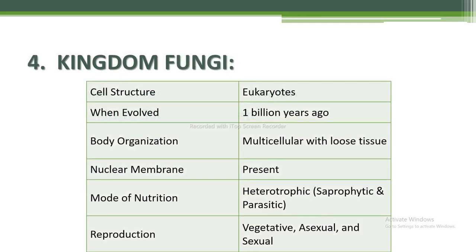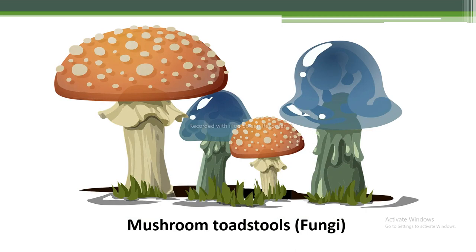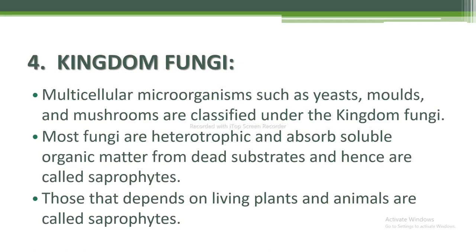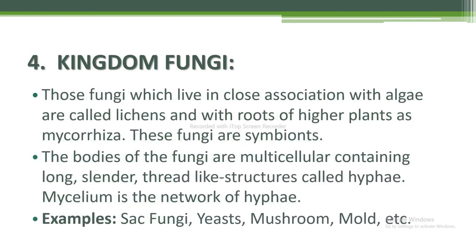Next is kingdom Fungi. Cell structure: eukaryote that evolved 1 billion years ago. Body organization: multicellular with loose tissue, nuclear membrane present. Mode of nutrition: heterotrophic — saprophytic and parasitic. Reproduction: vegetative, sexual, and asexual. Multicellular microorganisms such as yeast, molds, and mushrooms are classified under kingdom Fungi. Most fungi are heterotrophic, absorbing soluble organic matter from dead substrates — hence called saprophytes. Those that depend on living plants or animals are parasites. Fungi living in close association with algae are called lichens, and those with roots of higher plants are mycorrhiza.